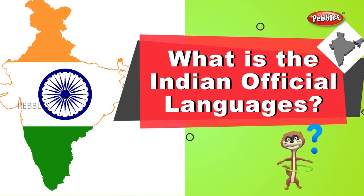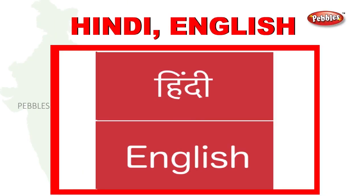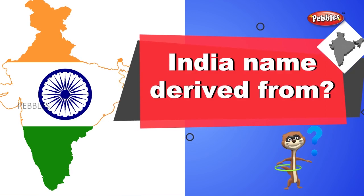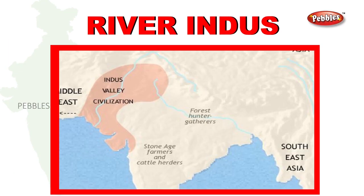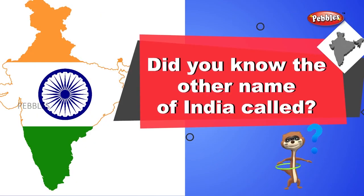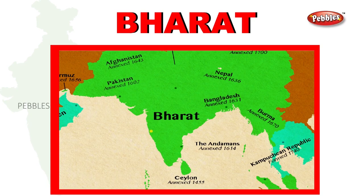What is the Indian official language? Hindi and English. India is derived from River Indus. What is the other name of India? Bharat.